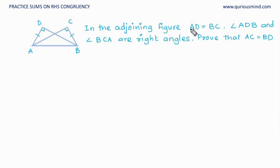In the adjoining figure AD is equal to BC. Angle ADB and angle BCA are right angles. Prove that AC is equal to BD. First let's go with the givens.